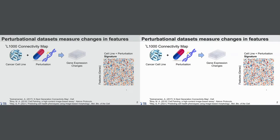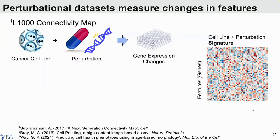The L1000 data set, which was originally published in 2017 by the Broad Institute, is an example of a perturbational data set. These data sets measure changes in some sort of biological feature space due to perturbations like compound treatment or genomic reagents. L1000 in particular measures changes in gene expression in cancer cell lines as a result of perturbation.